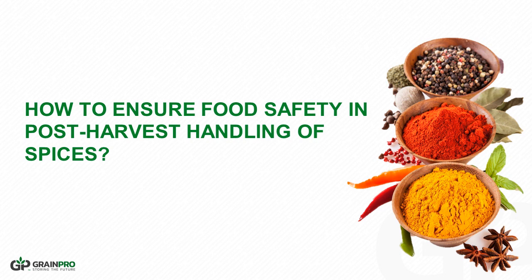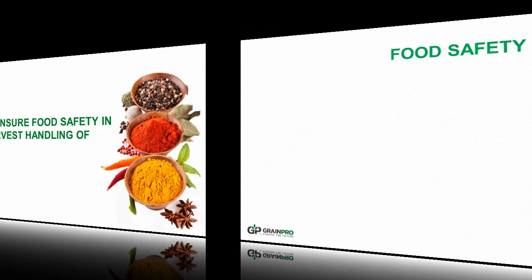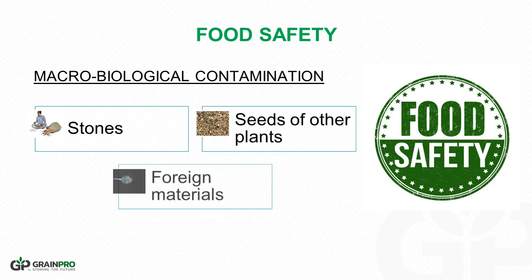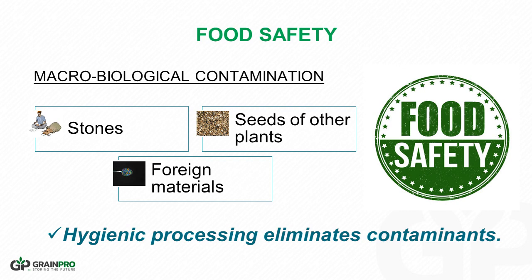Food safety is very important in drying, storage, and transport of spices. Food safety standards are very particular with the presence of contaminants in spices which cause harm to consumers. These contaminants include macrobiological and microbiological agents. Macrobiological agents that contaminate a commodity during the drying process include stones, seeds of other plants, and foreign materials. These contaminants may come from the drying floor, pavement, or surroundings. Presence of such contaminants may render low quality to spices. Clean drying eliminates these contaminants.